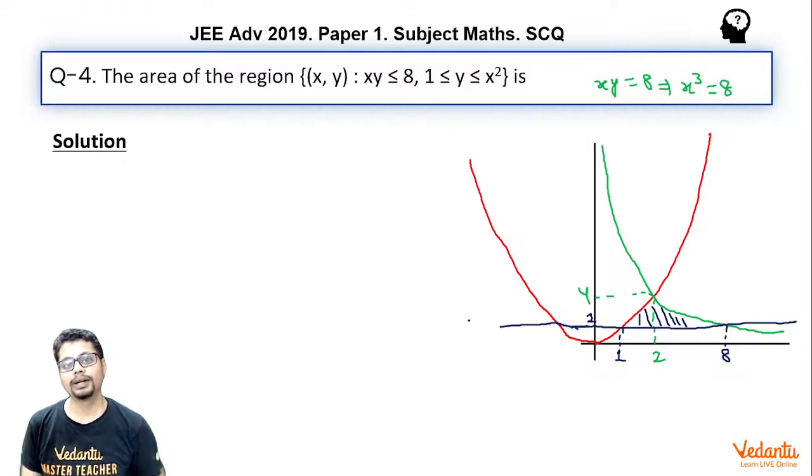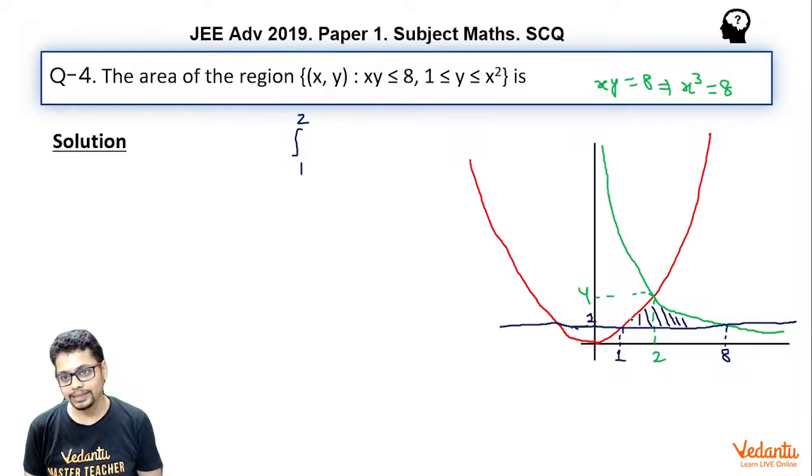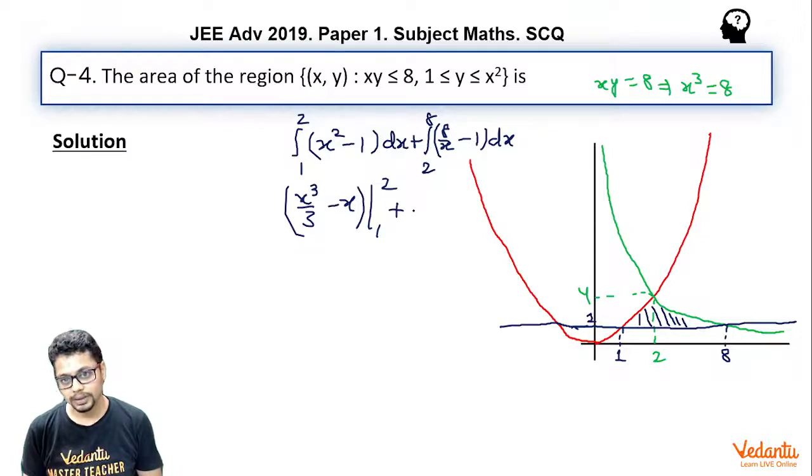Now this area you can find using the concept of vertical strips or horizontal strips. Let's use both. If I use vertical strips, I can say that the area would be integral 1 to 2, upper curve which is x² minus lower curve which is 1 dx, plus integral 2 to 8, upper curve which is y = 8/x minus lower curve which is 1 dx.